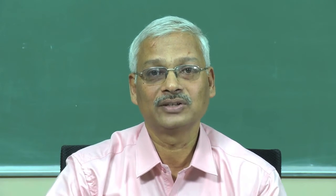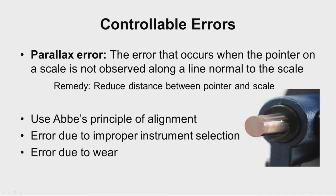Many times measuring instruments come with tungsten carbide coated surfaces. For example, in the micrometer, the anvil surface and spindle surface are tipped with carbide so that wear is less and the life of the instrument is more. The tip of the spindle is tipped with a carbide tip, which can be observed in the picture.